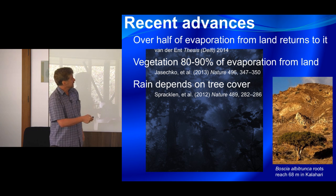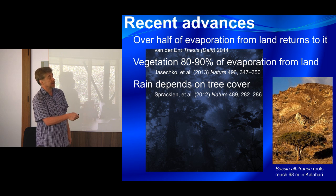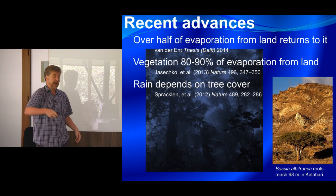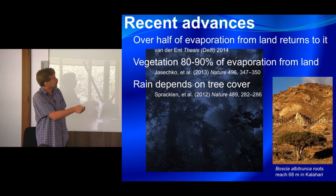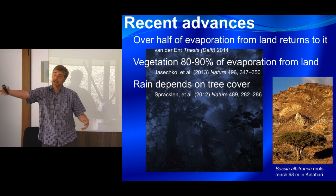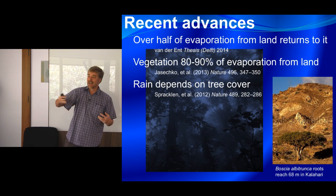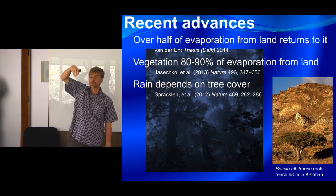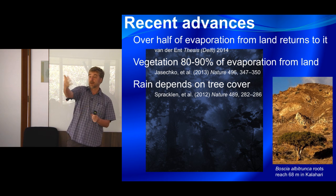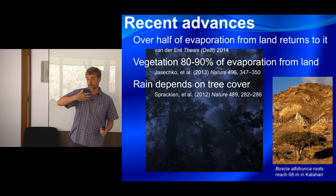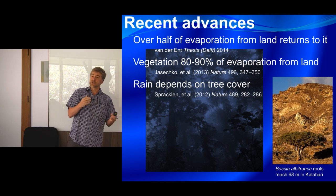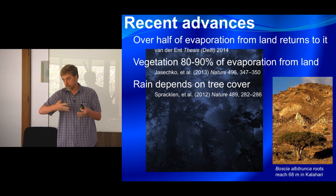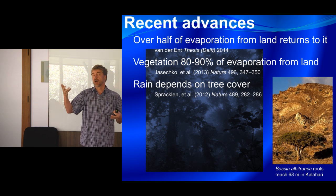There have also been advances in satellite technology that let us actually monitor this. Models can tell us where air is coming from, showing that rainfall really depends on tree cover — meaning how much forest cover the wind has come through affects the rainfall you get on a given day. If the wind has come through a forested area, you will generally get twice as much rainfall as if it's come across non-forested areas over the last 10 days.